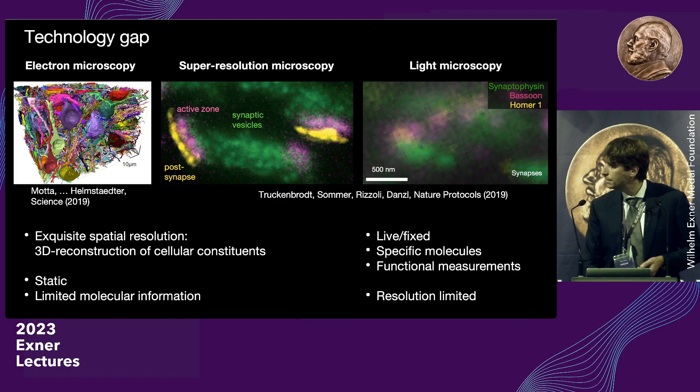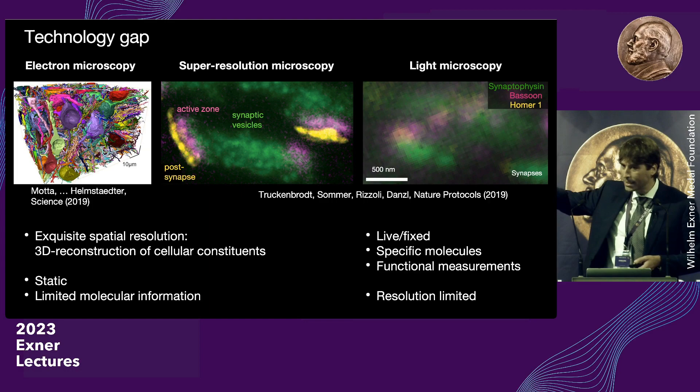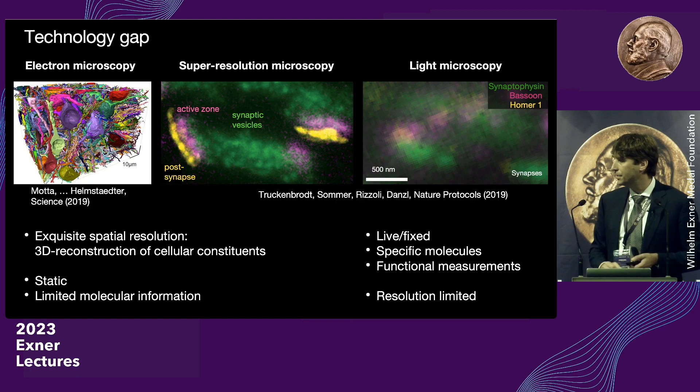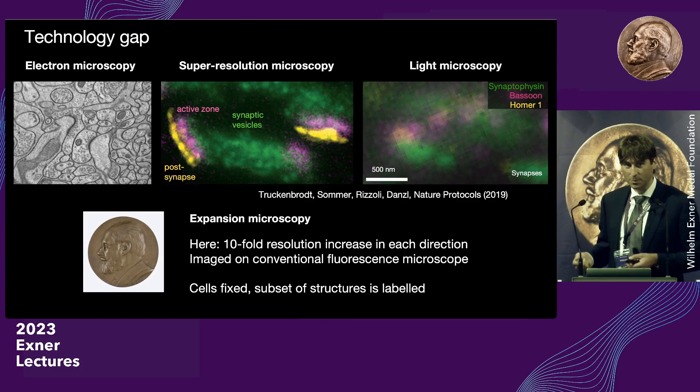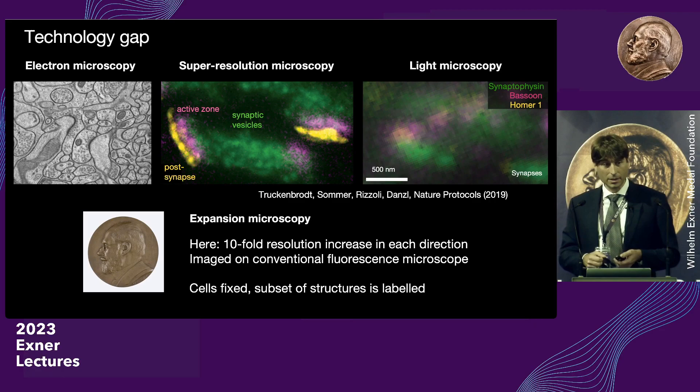What you can see here is a very similar synapse, actually recorded with the same microscope. You start seeing the individual synaptic vesicles where the neurotransmitters are stored, in pink the region where they're released, and in yellow where they're detected by the next neuron. This image was performed with expansion microscopy — in this case we expanded the cells tenfold in each direction, meaning a thousandfold volume increase.